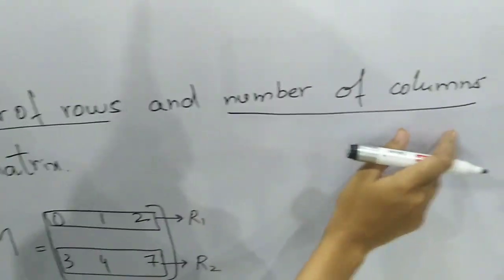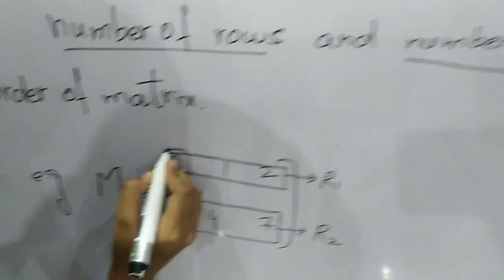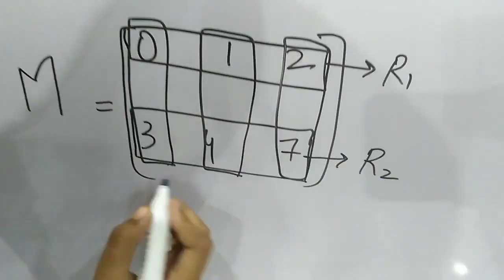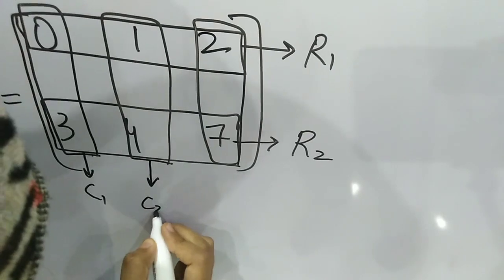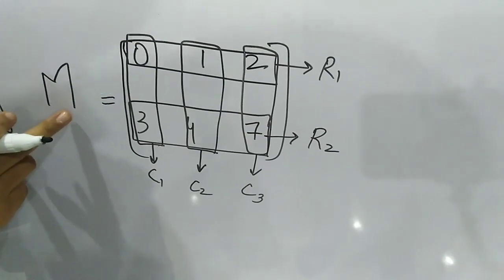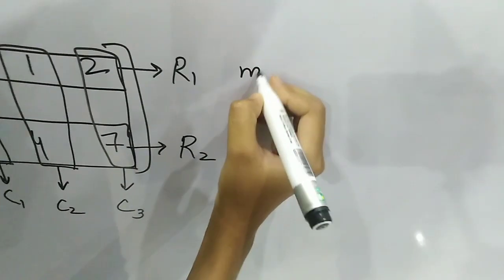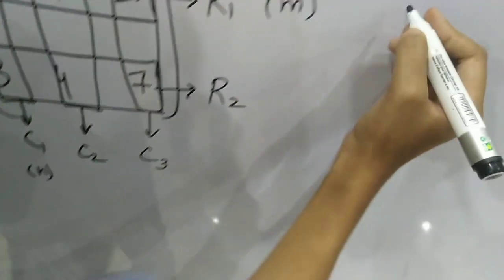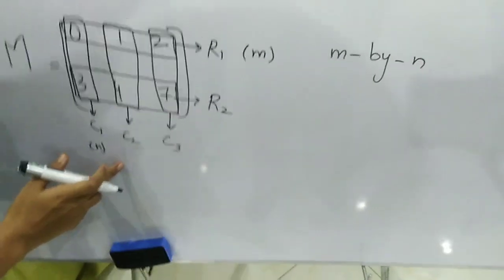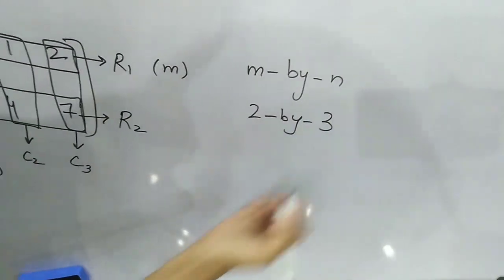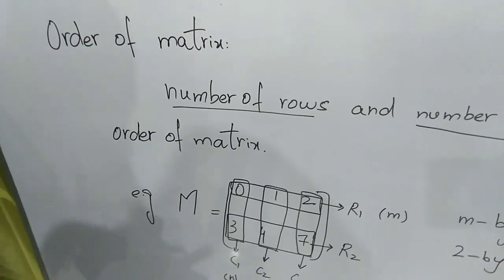We can name the rows R1 and R2. The columns are C1, C2, and C3. If a matrix M has m rows and n columns, the order will be m by n. In this example, the number of rows is 2 and the number of columns is 3, so the order of the matrix is 2 by 3.